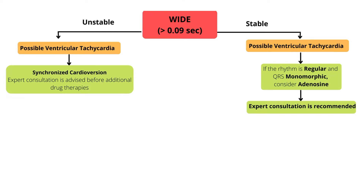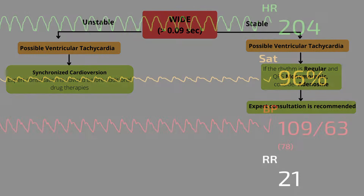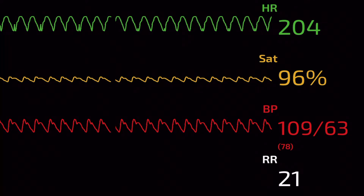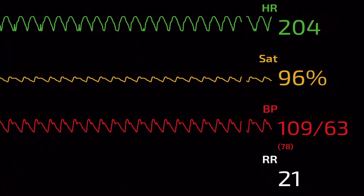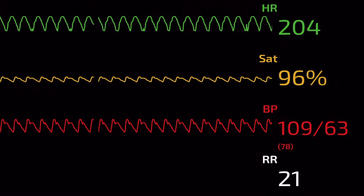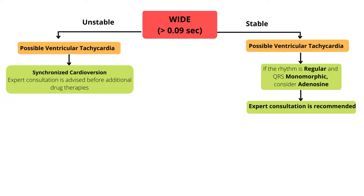If the QRS is greater than 0.09 seconds, treat it as a possible ventricular tachycardia or VT. If the patient is stable and the rhythm is regular and QRS is monomorphic, consider adenosine. Avoid adenosine if the rhythm is irregular, as this may result in an unstable rhythm — expert consultation is recommended. If a child with a wide-complex tachycardia is hemodynamically stable, early consultation with a pediatric cardiologist or other provider with appropriate expertise is strongly recommended.